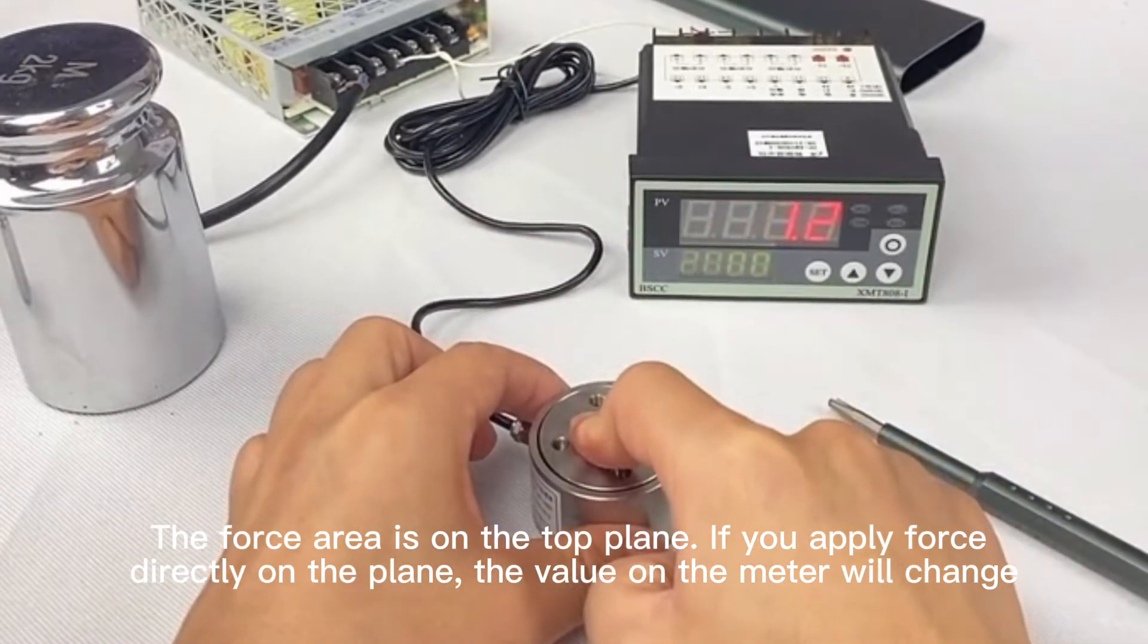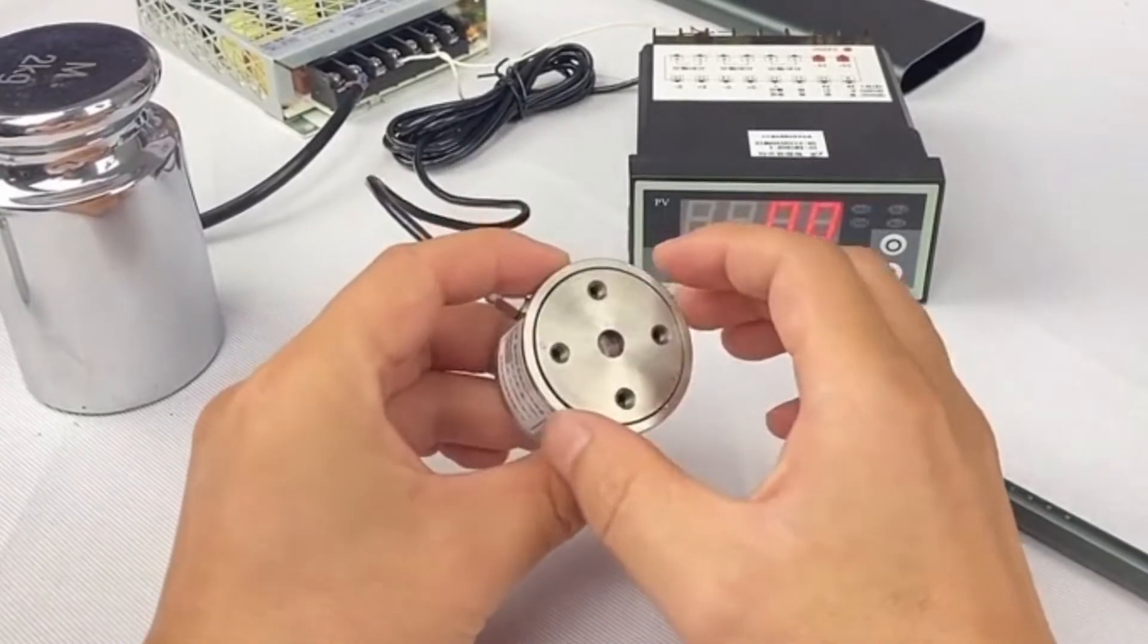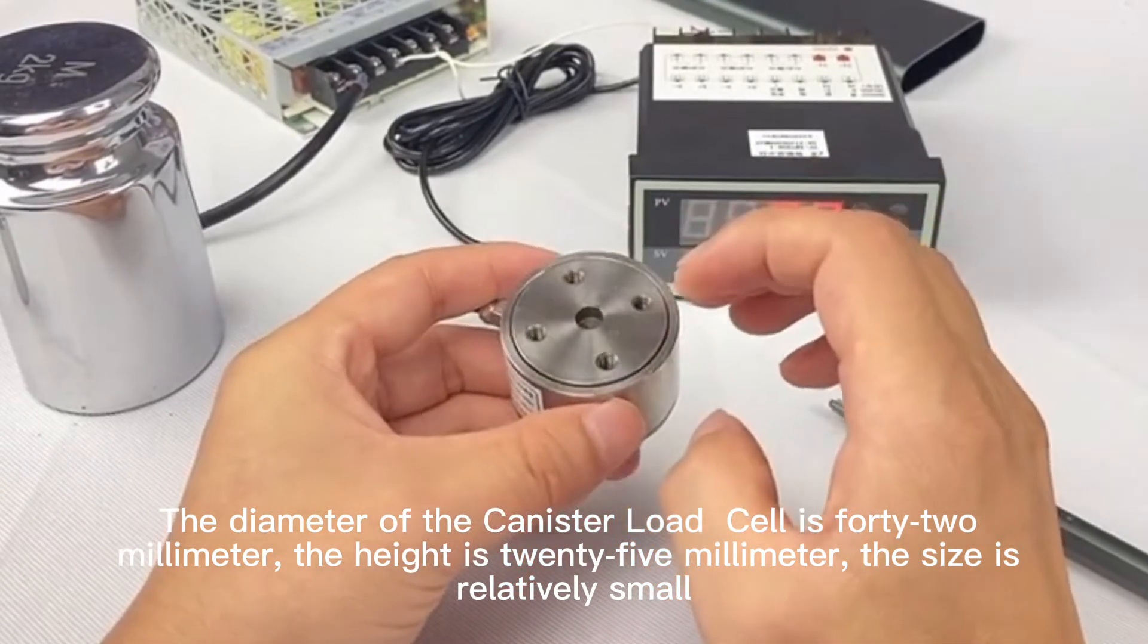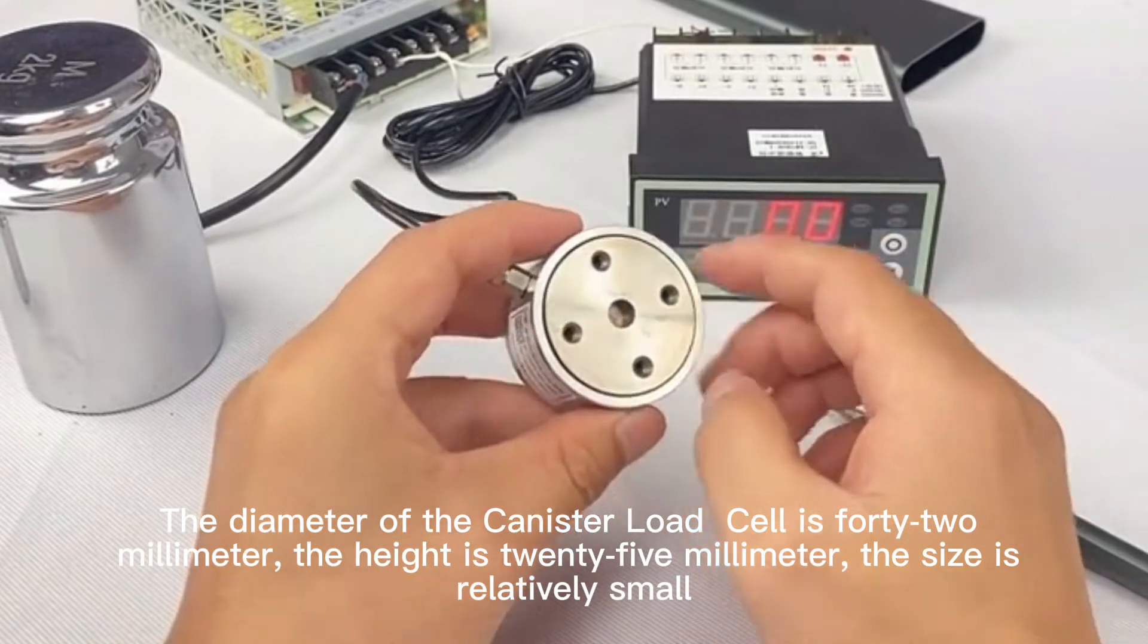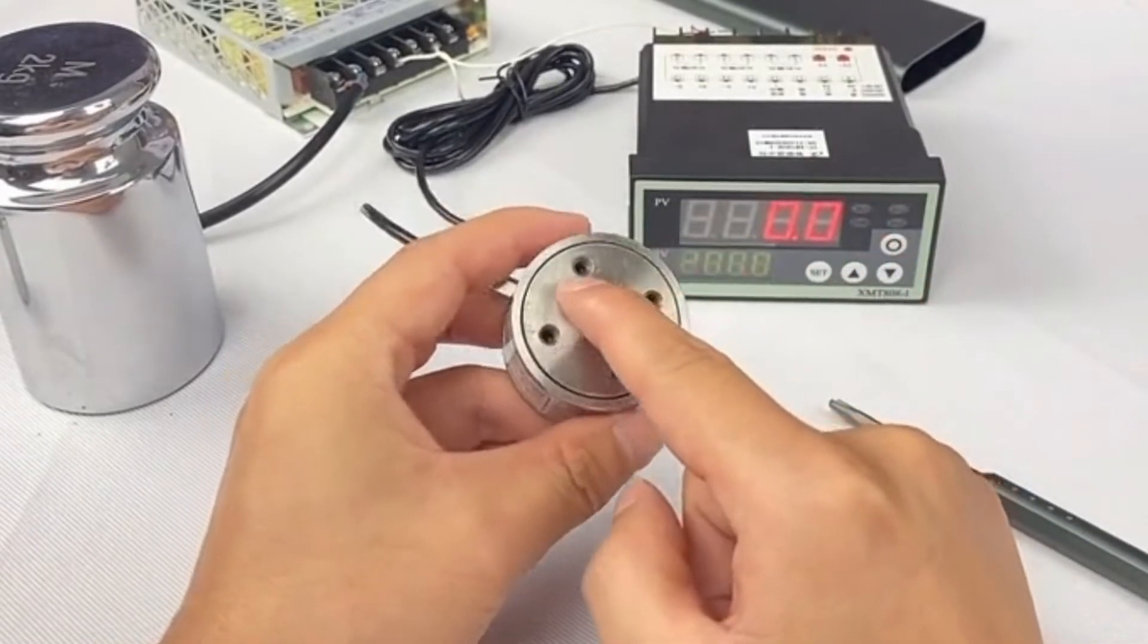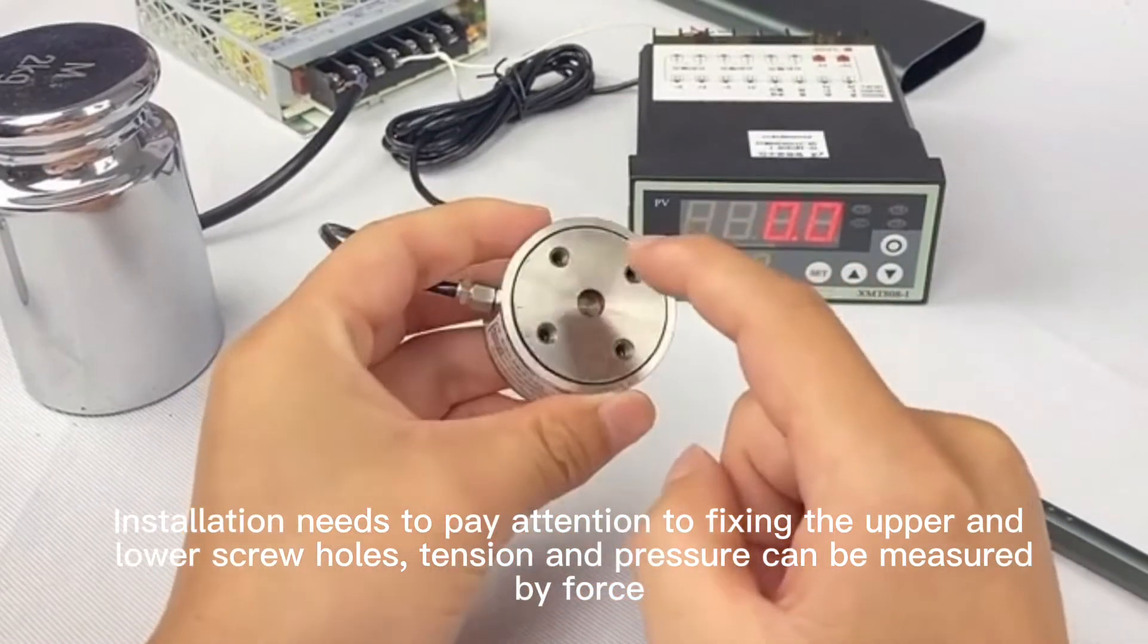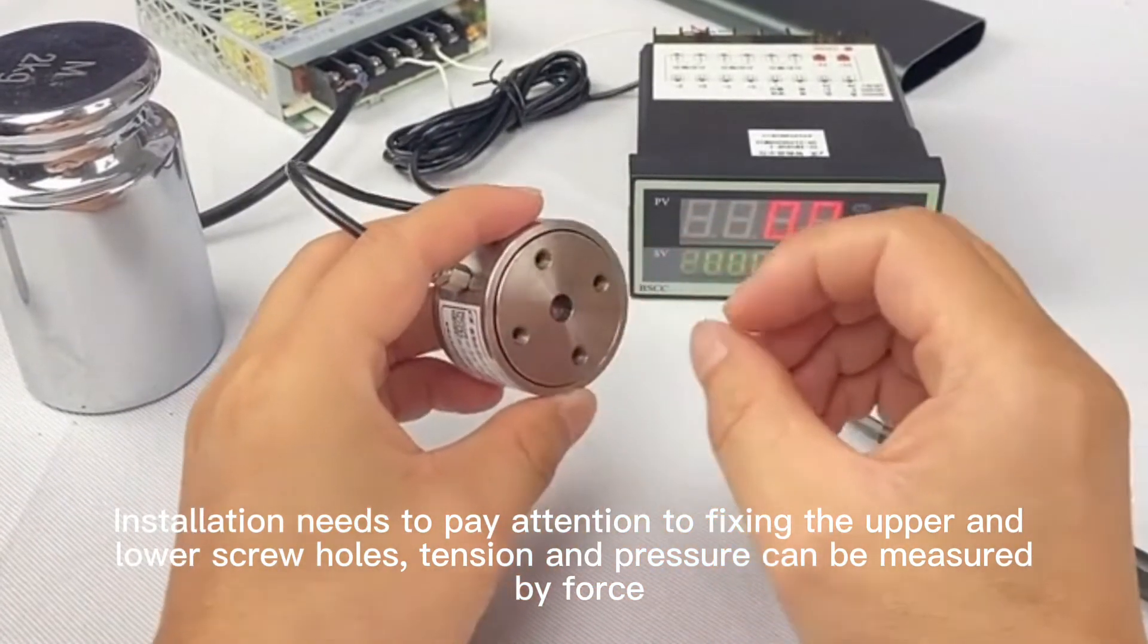If you apply force actually on the plane, the value on the meter will change. The diameter of the canister load cell is 42 mm, the height is 25 mm. The size is relatively small. Installation needs to pay attention to fixing the upper and lower screw holes. Tension and pressure can be measured by force.